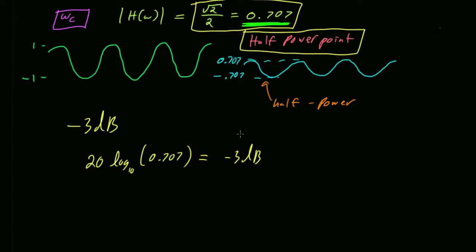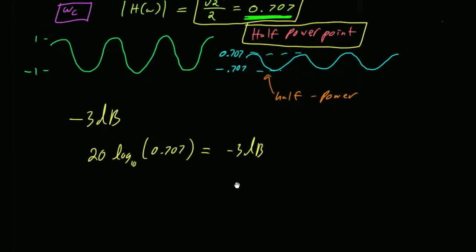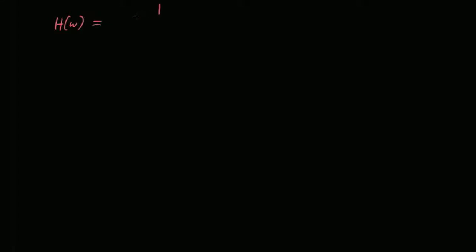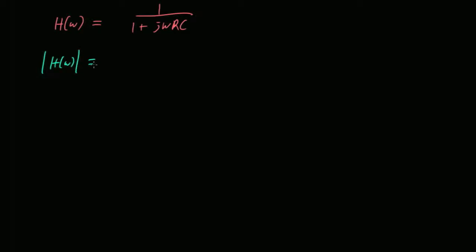What is the cutoff frequency of this circuit? Let's figure out what it is. What was our transfer function? It's 1 over 1 plus j omega RC in complex form. We took the magnitude of it, which contains both magnitude and phase. The magnitude equals 1 over the square root of 1 plus omega RC squared. Right now we have R equals 1,000 and C equals 200 microfarads.